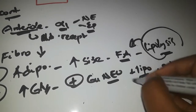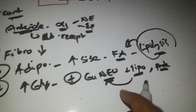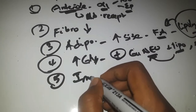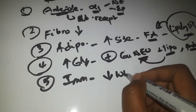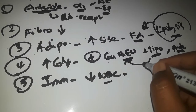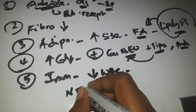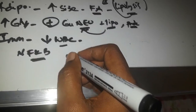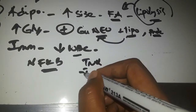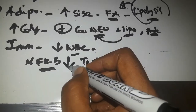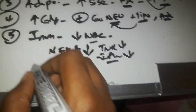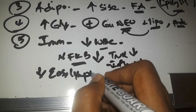The products of lipolysis and proteolysis can be used in making new glucose, increasing the glucose amount in the body. On the immune system, cortisol decreases WBC migration and leukocyte chemotaxis to injury sites. It also decreases nuclear factor kappa-beta (NF-κB), an inflammatory transcription factor, reducing TNF-alpha response and synthesis of inflammatory mediators. Other effects include increased eosinophils but decreased lymphocytes and interleukins.